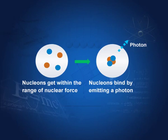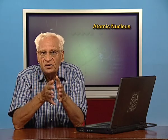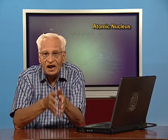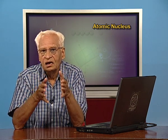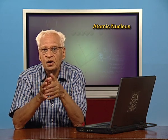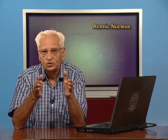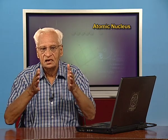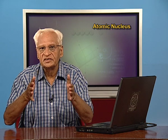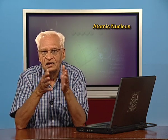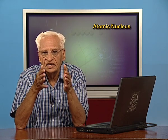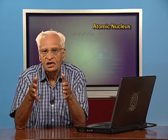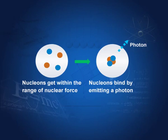Let me define once again the atomic mass unit. It is defined as one-twelfth of the mass of the most abundant isotope of carbon, which is carbon-12. Carbon-12 is defined as having mass 12.00, and one-twelfth of that is defined as one atomic mass unit. Its value is 1.66 × 10⁻²⁷ kilograms. So these four nucleons have mass four u — four atomic mass units.